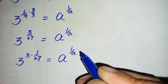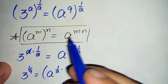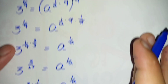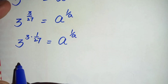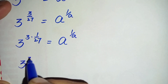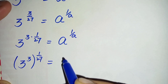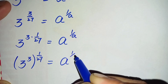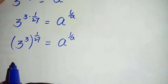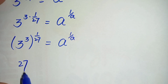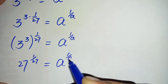Now on the left hand side we will use the exponential property to bring out 1 over 27 from 3 raised to power 3. That is, 3 raised to power 3, whole raised to power 1 over 27 is equal to a raised to power 1 over a. Now we find the value of 3 raised to power 3, which is 27. This becomes 27 raised to power 1 over 27 is equal to a raised to power 1 over a.